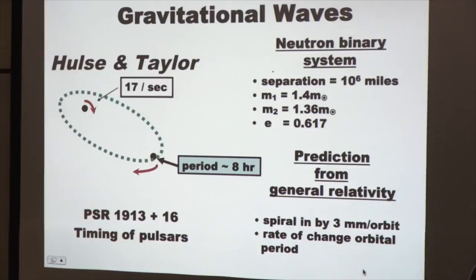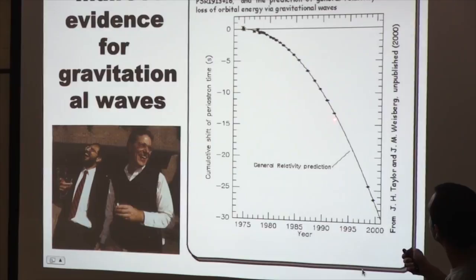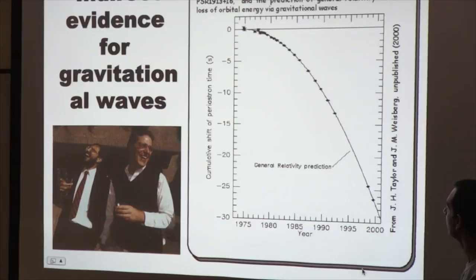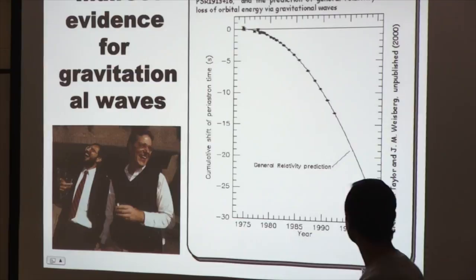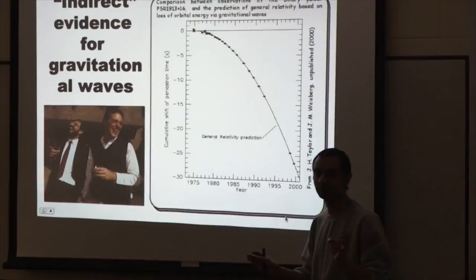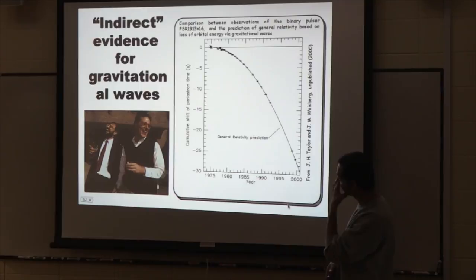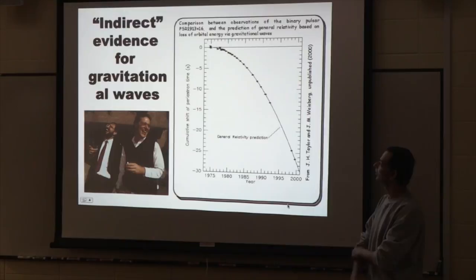They calculated using general relativity what the in-spiral rate would be — about three millimeters per orbit — and from that calculated how the orbital period would change. Graphing their raw data, with error bars so tiny you can barely see them, alongside the GR prediction, the match is remarkable. The GR prediction required no parameter tuning; it's literally raw data plotted together. This was the first very strong evidence that gravitational waves are genuinely there — we just hadn't been able to detect them directly.